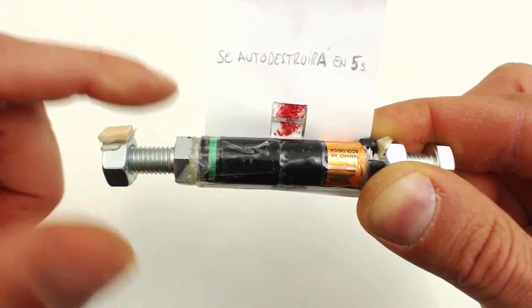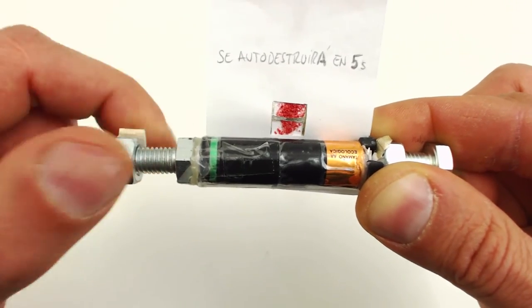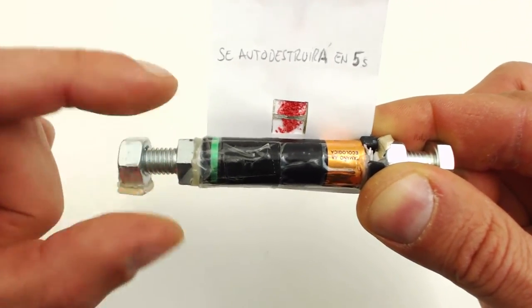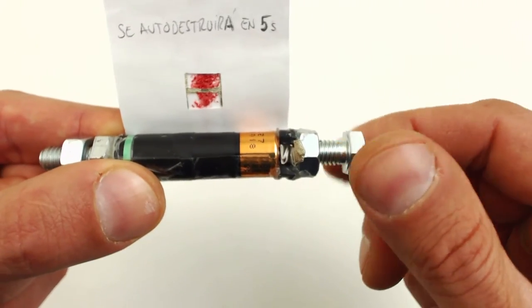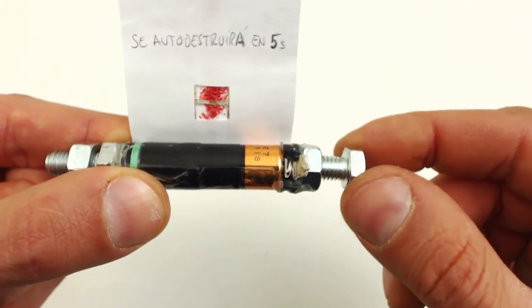Now twist your nut onto the bolt, leaving two turns away from the end. Repeat this action on the opposite end, including siliconing your second wooden piece to the nut.